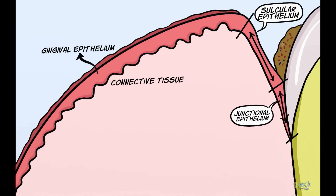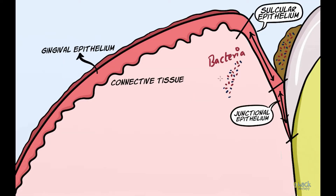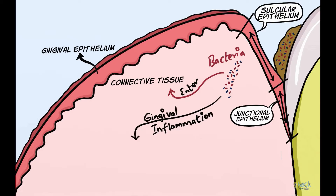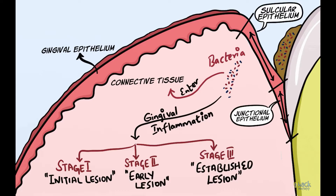Gingivitis starts off by an inflammatory process being triggered by dental plaque. The bacteria and their toxins from the gingival sulcus penetrate through the intercellular gaps in the junctional epithelium to enter the underlying connective tissue. Events leading to causation and progression of gingivitis are divided into three stages: stage 1 is the initial lesion, stage 2 is the early lesion, and stage 3 is the established lesion.